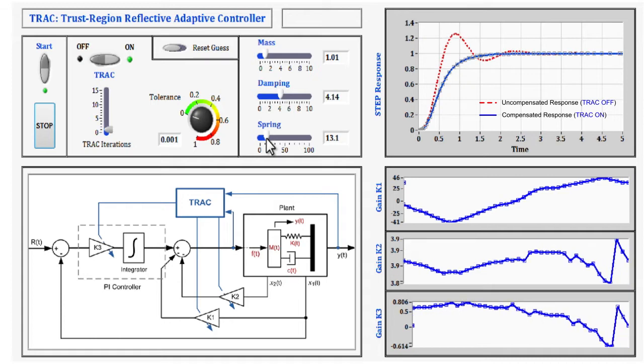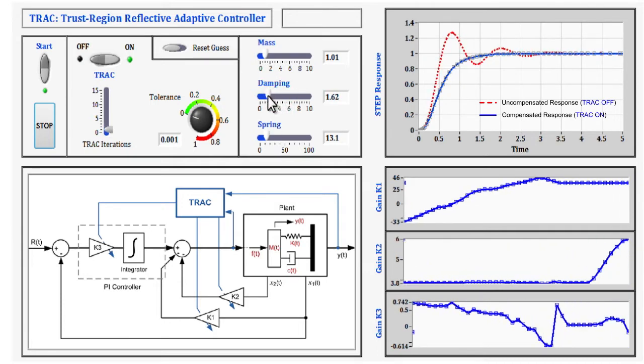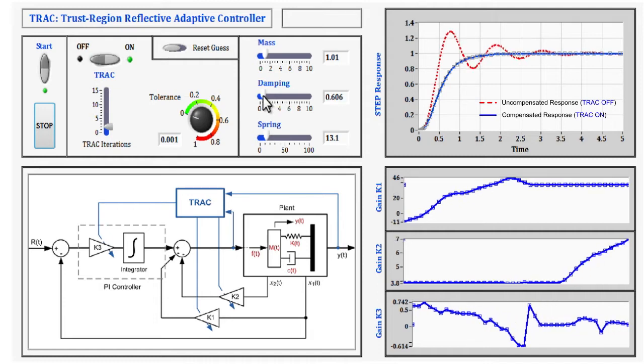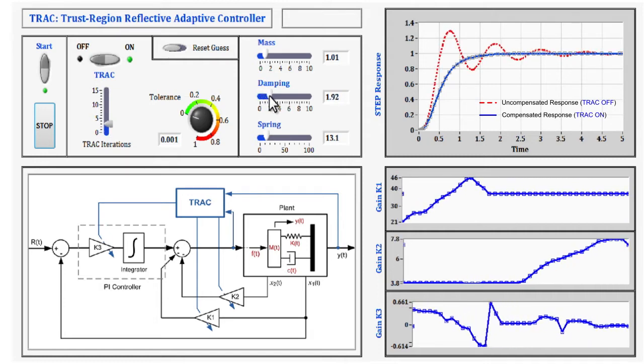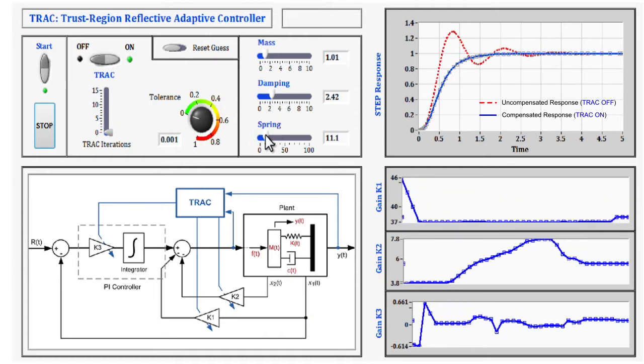Note that in the top graph, the red plot represents the uncompensated response, or the response of the system when TRAC was off, and the blue plot represents the actual response corrected by TRAC to eliminate the impact of the disturbance.